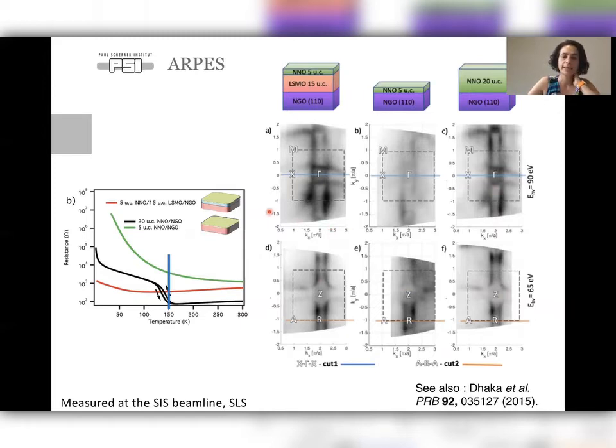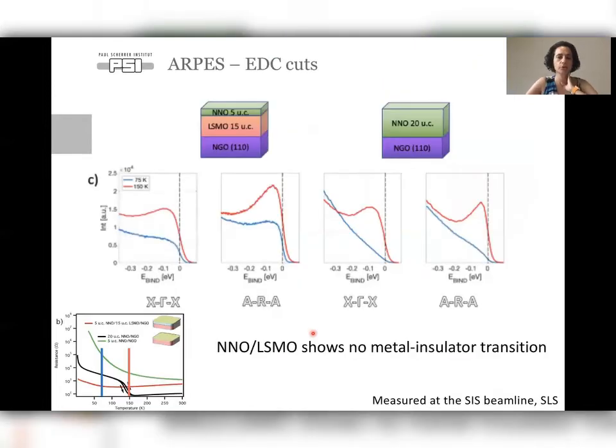Now we look at, and these measurements were done here at the metallic phase. Now we're going to look at these two cuts that are marked with this line, gamma X and A R, by looking at the energy distribution curves at different temperatures. So now we compare 150 Kelvin that are shown before with the 75 Kelvin, which is here below the metal-insulator transition for the thick film at least. So we have above the metallic phase, we have this strong peak, this quasi-particle peak with a considerable density of states at the Fermi level. When you lower temperature, as expected, this density of states decreases and moves to higher binding energies. And the same thing happens for both directions.